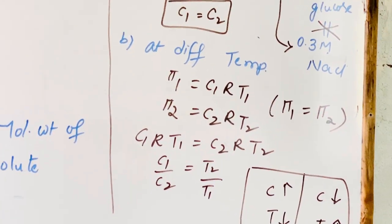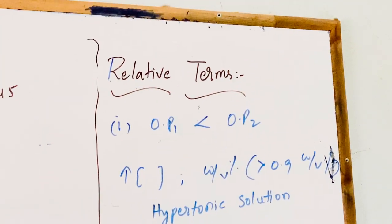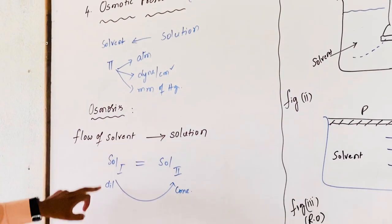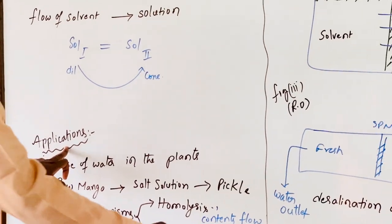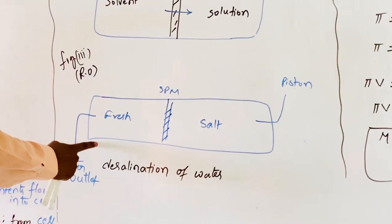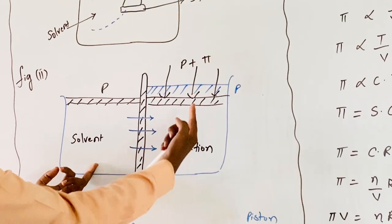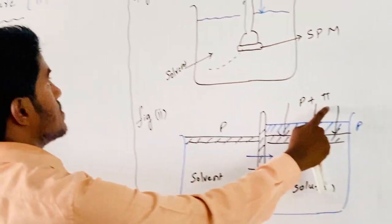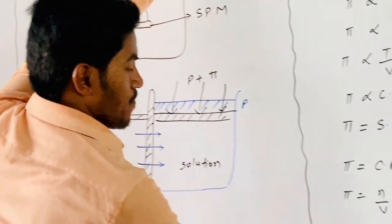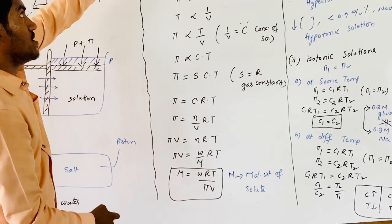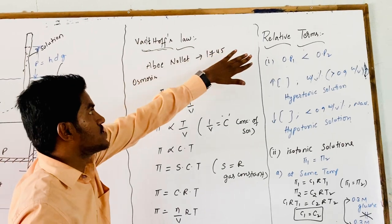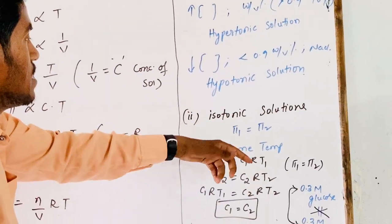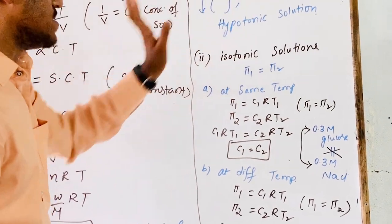In this session, we discussed osmotic pressure: the definition of osmosis, relative applications, and the diagrammatic representation of reverse osmosis. We also covered the calculation of molecular weight of an unknown solute from osmotic pressure using Van't Hoff's law, and the relative terms — solutions with less or greater concentration, and isotonic solutions having equal concentration and equal osmotic pressure. Thanks for watching.